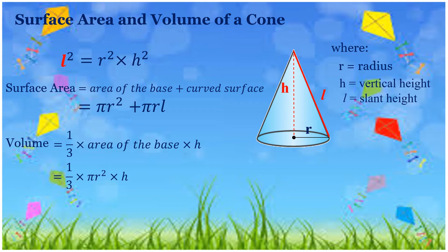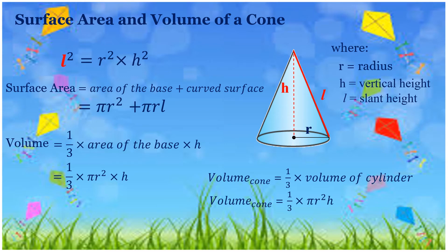Another way to remember the volume of a cone: volume of a cone is equal to 1 third times the volume of a cylinder. The volume of a cylinder is pi R squared H, so the volume of a cone is equal to 1 third times pi R squared H. Either formula will do.